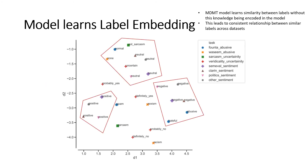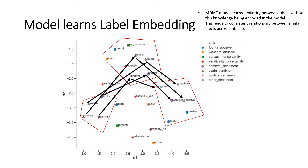For classification tasks, the labels across tasks are also clustered semantically, and the label embeddings capture a direction across positive, neutral, and negative style labels.